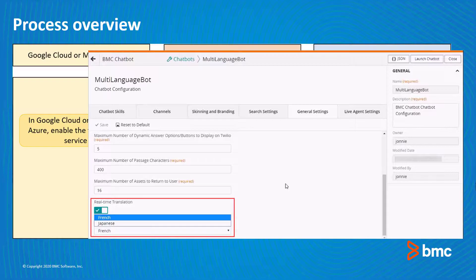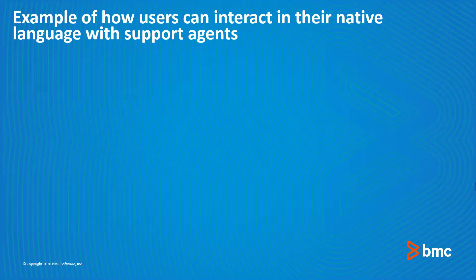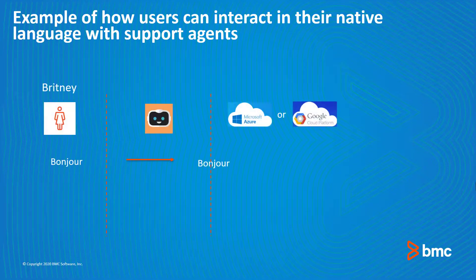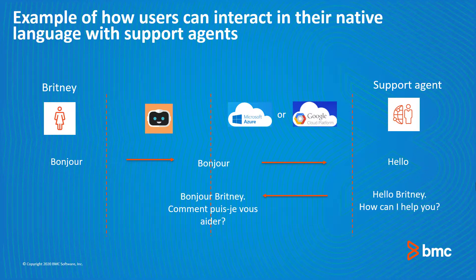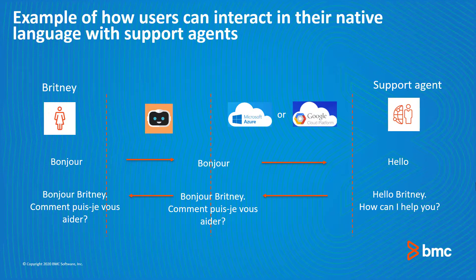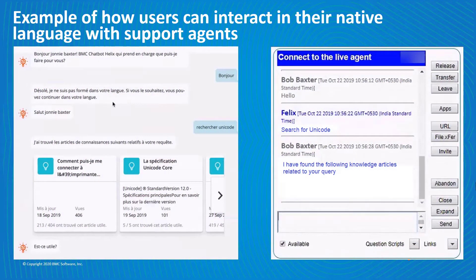Let's look at an example to understand how real-time translation helps users interact in their native language with support agents. An employee opens a chatbot and submits a request in French. The agent asks for the purpose of the requirement in English. The employee replies in French, which is translated for the agent in English. The agent types the reply in English, which is then translated to French for the employee. The interaction continues until the employee's request is resolved.